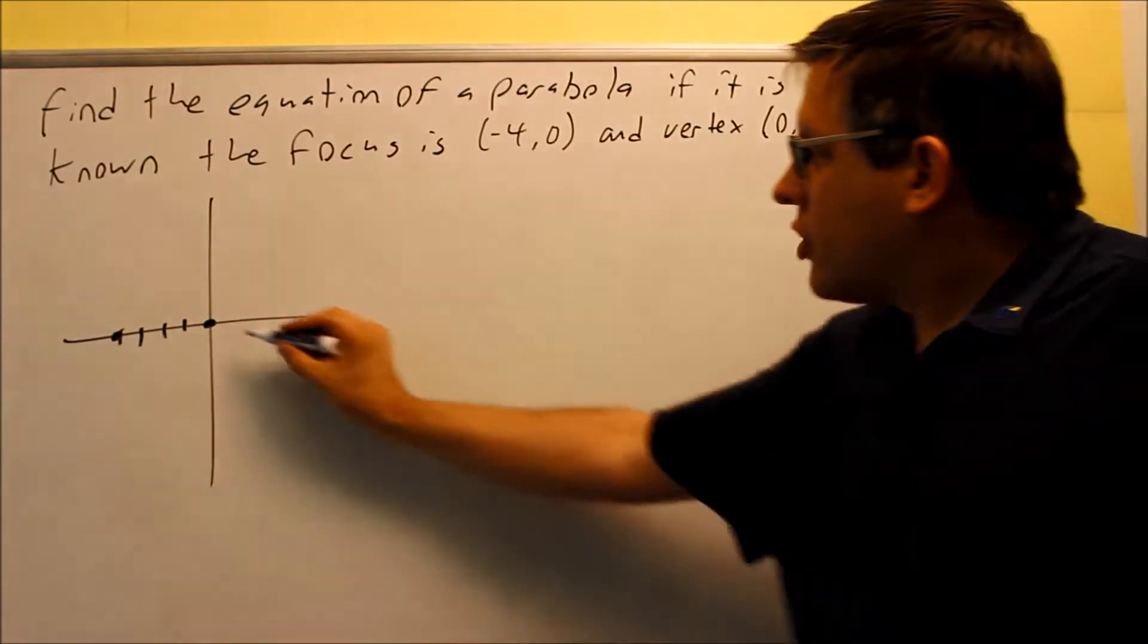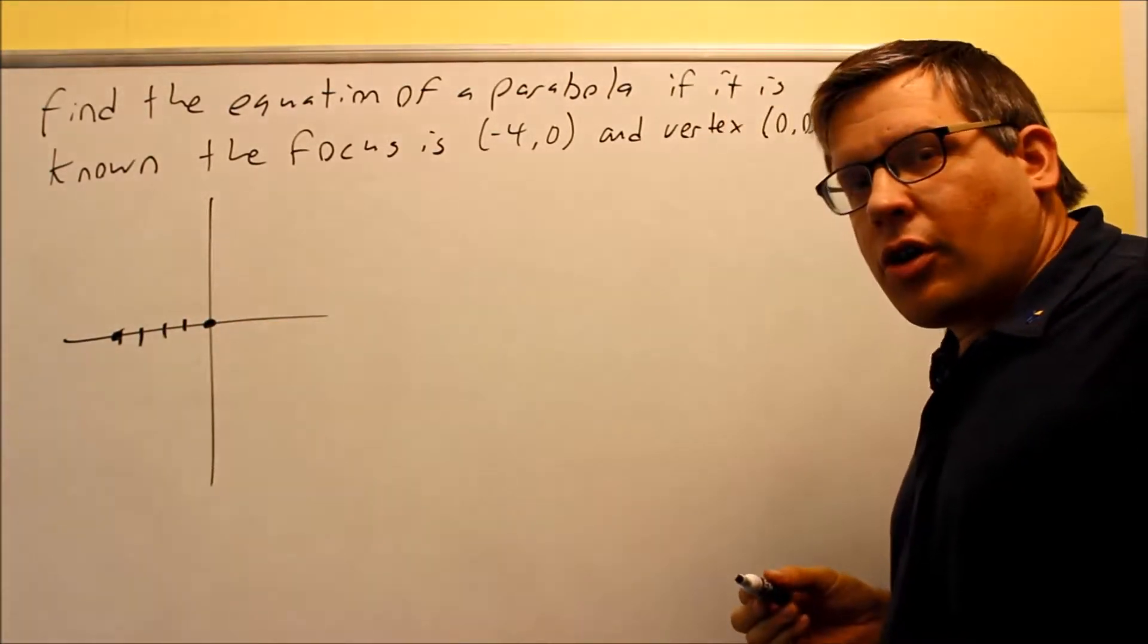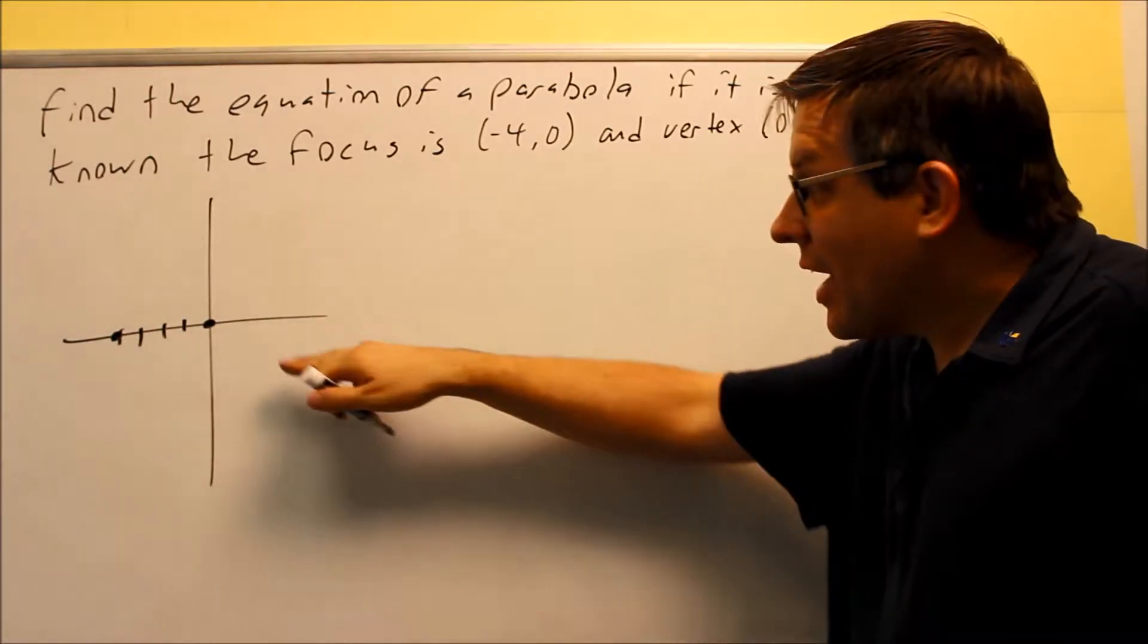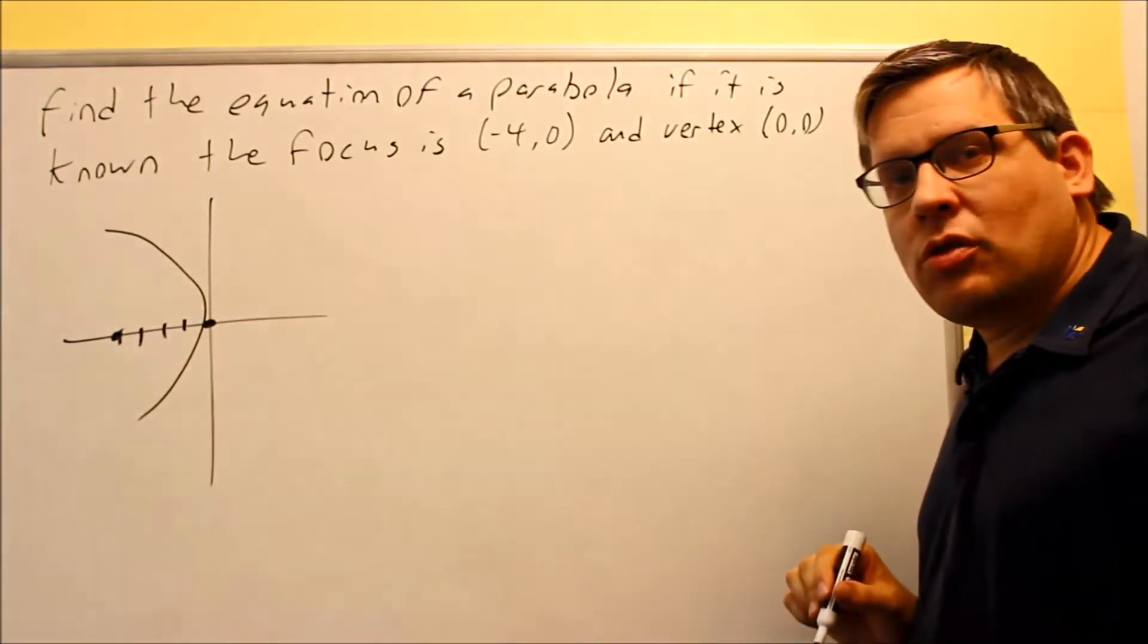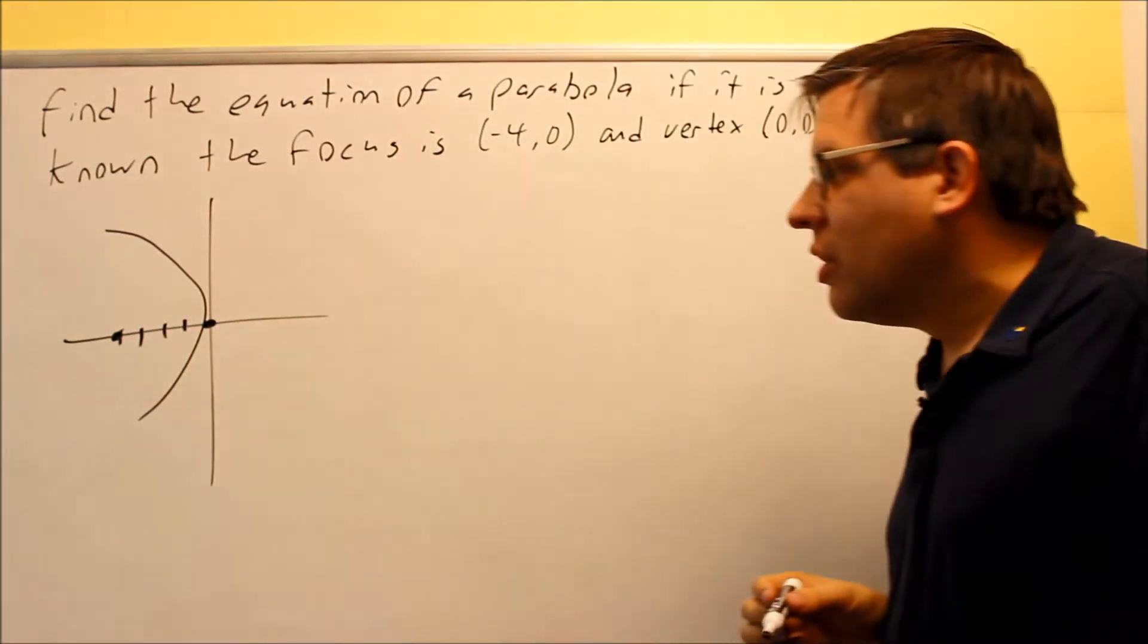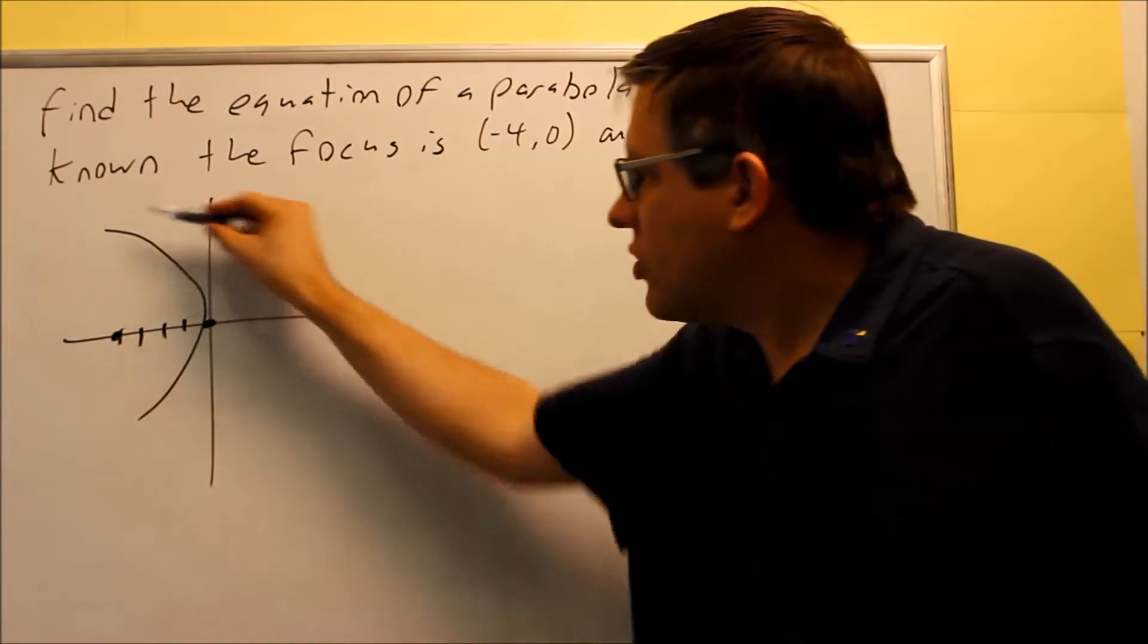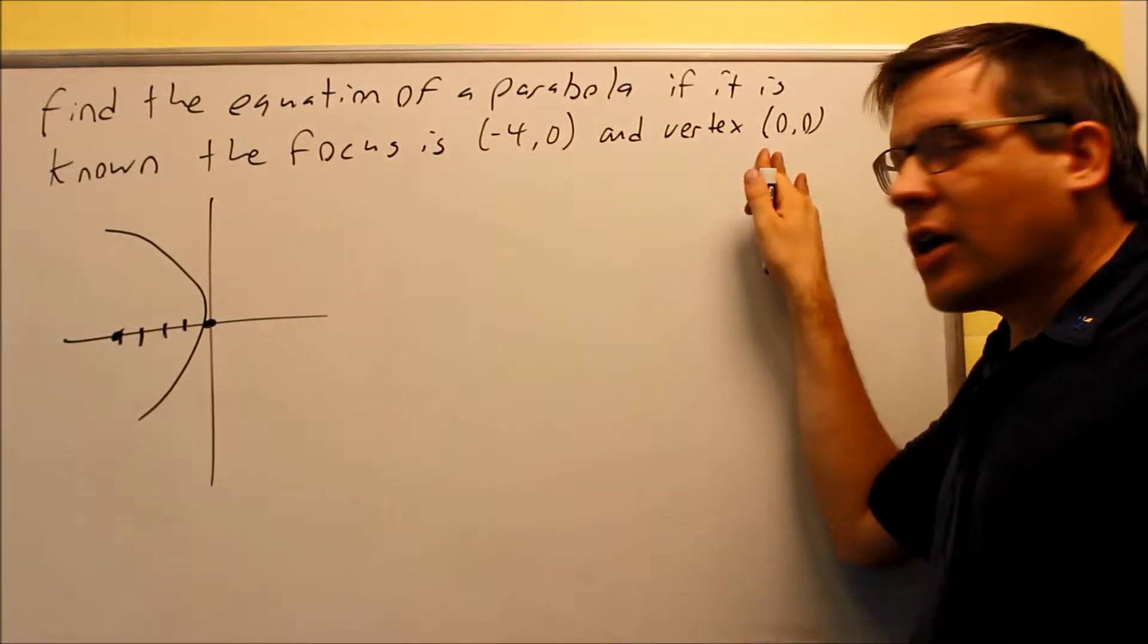So the vertex is here, and the focus is there. Your curve is always going to open up towards the focus. So what I know from this is that you're going to have to have a parabola that opens up to the left. The reason why is because that curve has to actually include the focus. So because it includes that, I know for sure it opens up to the left. I also know that I have a vertex of 0, 0.